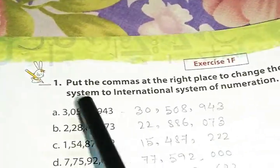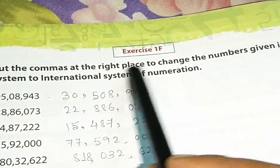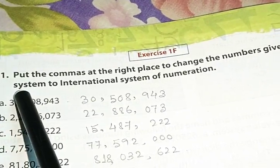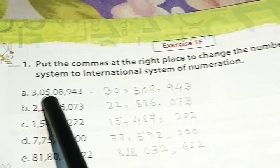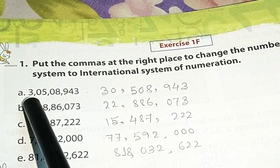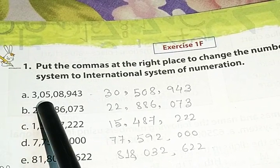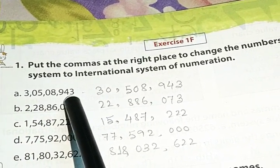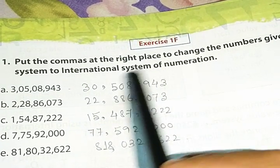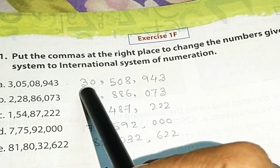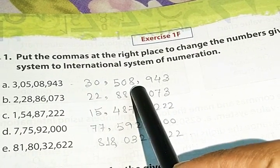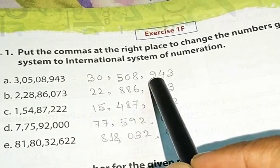Next, look at the next exercise. Exercise 1F. Put the commas at the right place to change the number given in the India system to international system of numeration. So, in case of Indian system, it will be 3 crores, 5 lakhs, 8,943. But in case of international system, the commas will be changed in this way. And it will be called 30,508,943.